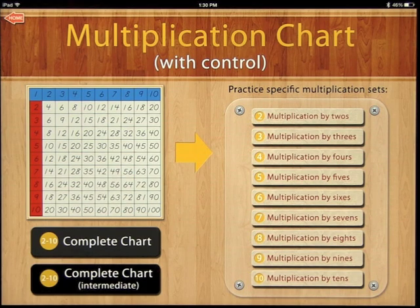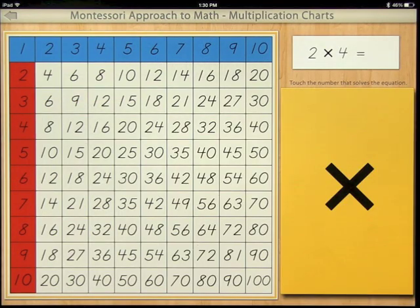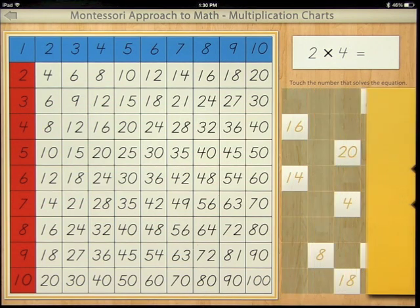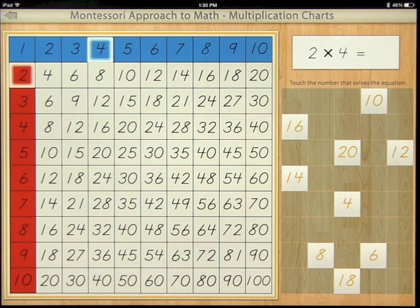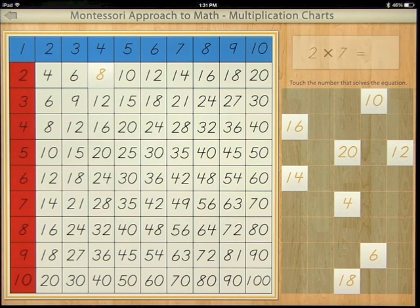Right there, we just chose the number 2, but it's from 2 to 10 for the multiplications. You can do the complete chart where it'll come up with random problems. 2 times 4 equals 8.